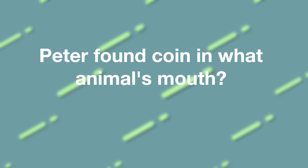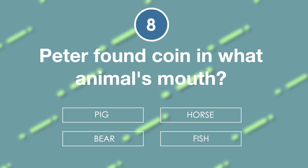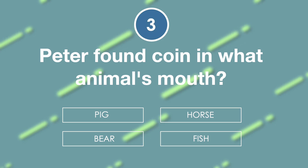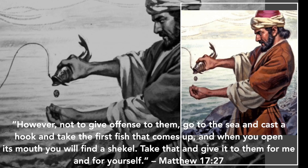Peter found a coin in what animal's mouth? Is it pig, horse, bear, or fish? The answer is fish. 'However, not to give offense to them, go to the sea and cast a hook and take the first fish that comes up, and when you open its mouth you will find a shekel. Take that and give it to them for me and for yourself.' Matthew 17 verse 27.